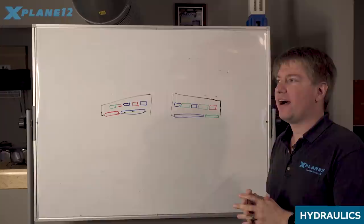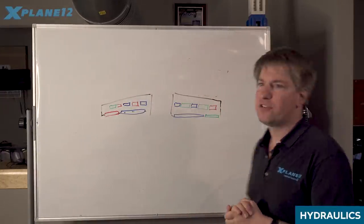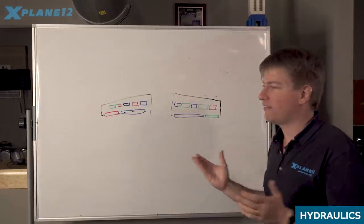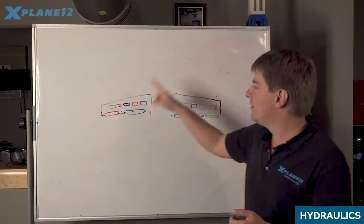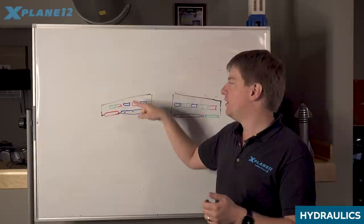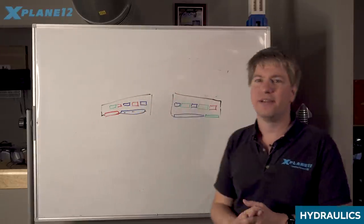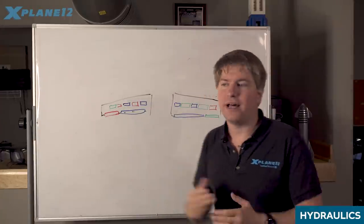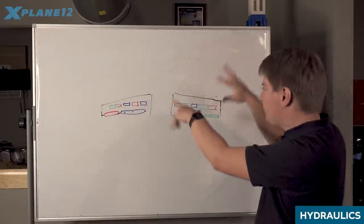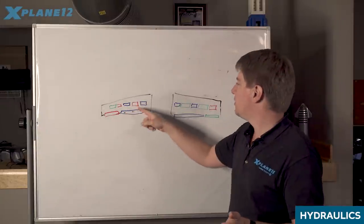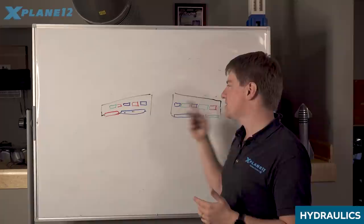Another big change in X-Plane 12 is that you can assign each individual control surface on each wing its own hydraulic system. In X-Plane 11 it was a very simple thing. Like you could either have hydraulically actuated flight controls or not. But in X-Plane 12 you can pick each individual aileron or flap or spoileron or ground spoiler or flight spoiler on the left wing or the right wing and assign each one one or multiple hydraulic systems that it's powered from. So in this fictional airplane setup I have sketched here on the board, in case you lost the red hydraulic system you would lose those individual red surfaces and could still fly on the blue and green surfaces.